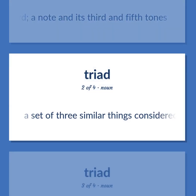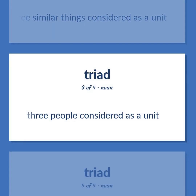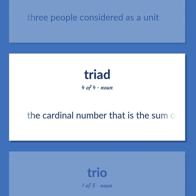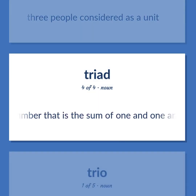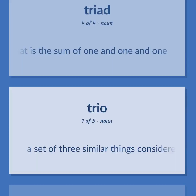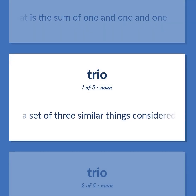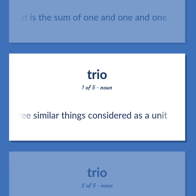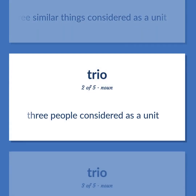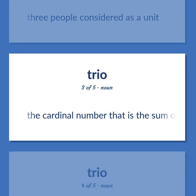Trio: A set of three similar things considered as a unit. Three people considered as a unit. The cardinal number that is the sum of one and one and one.